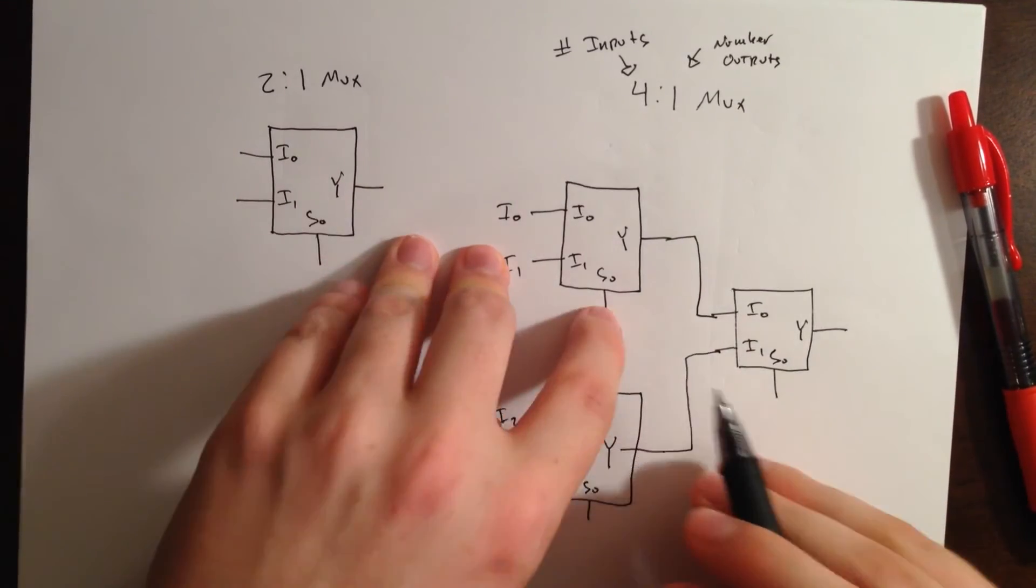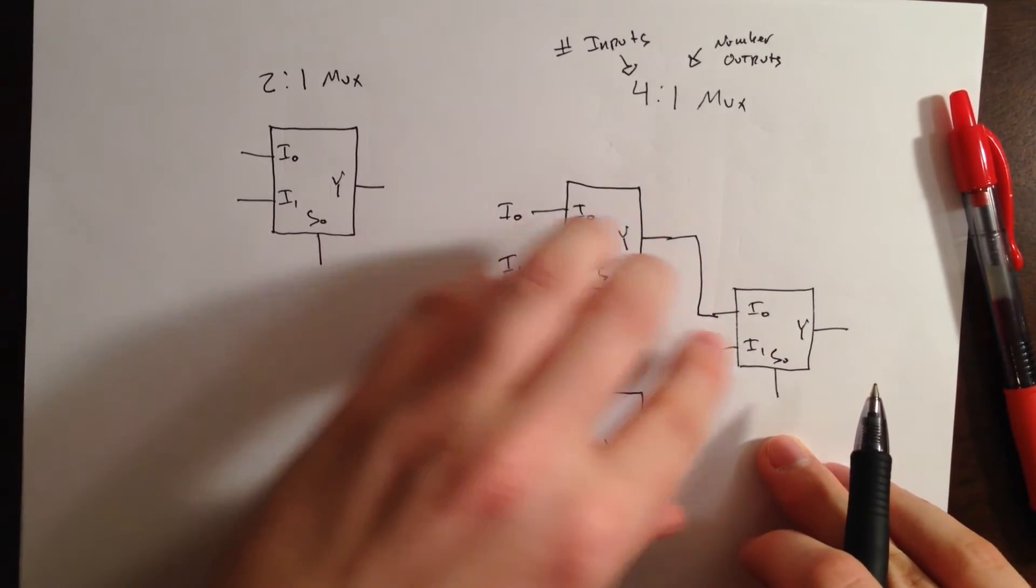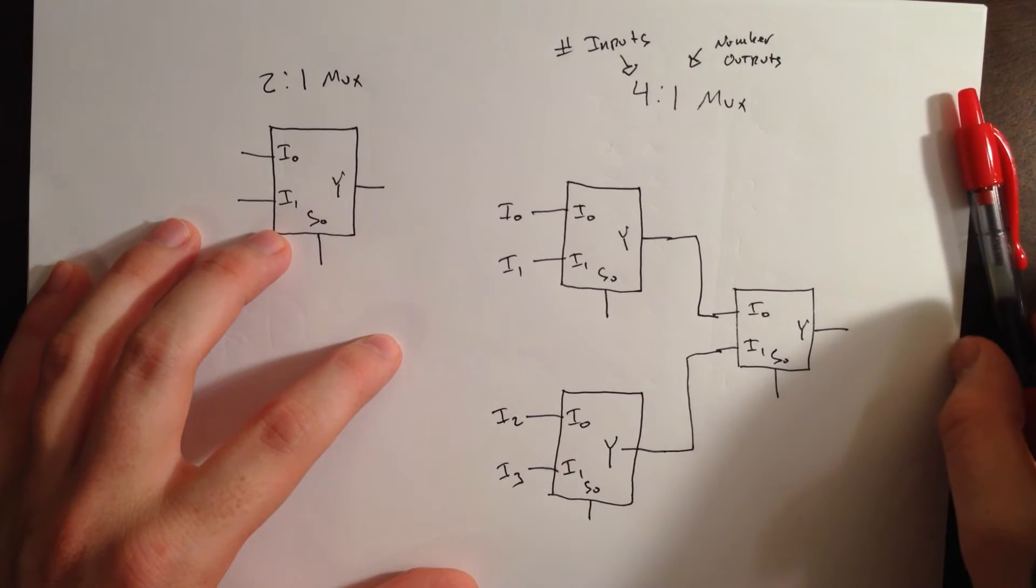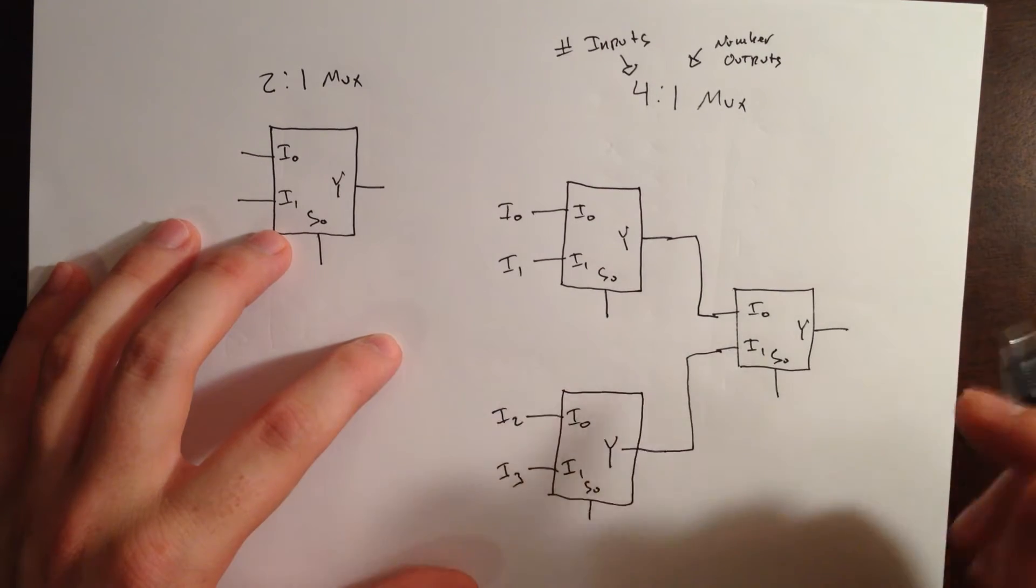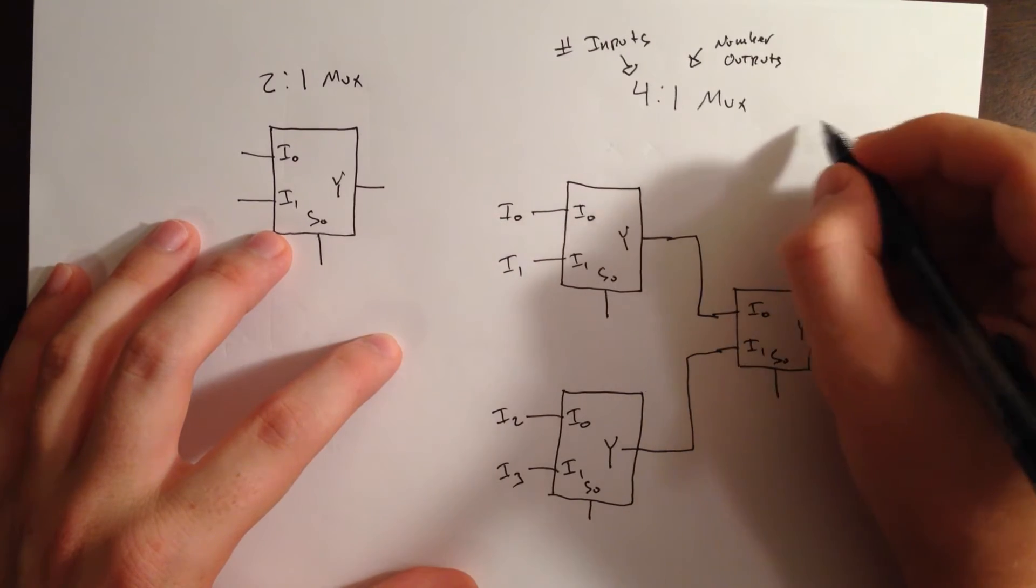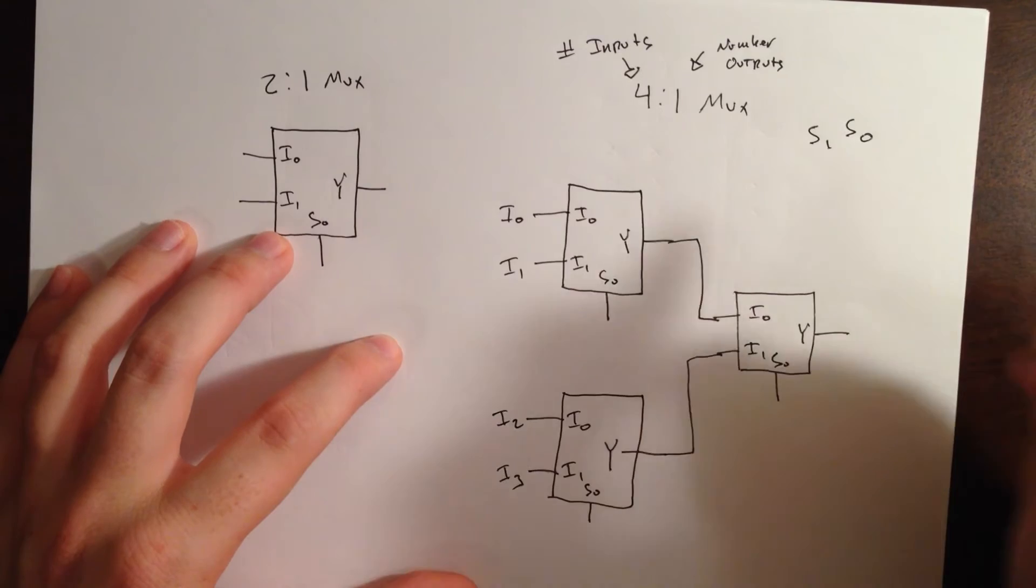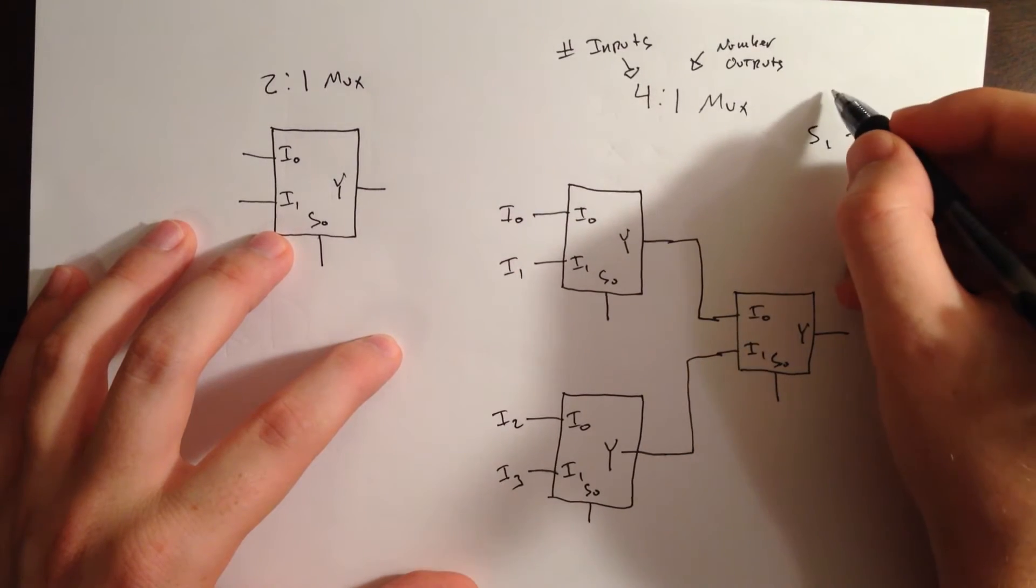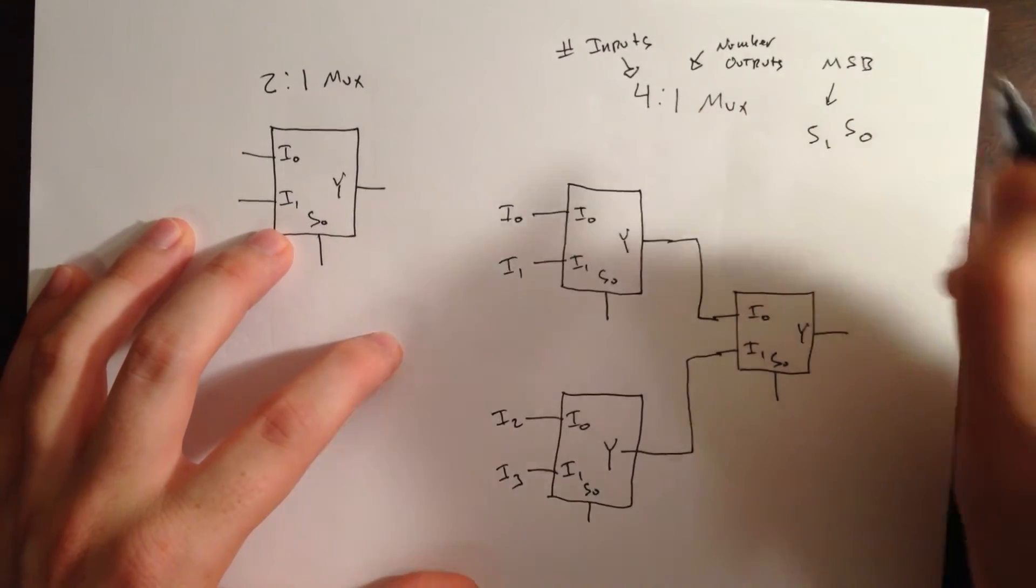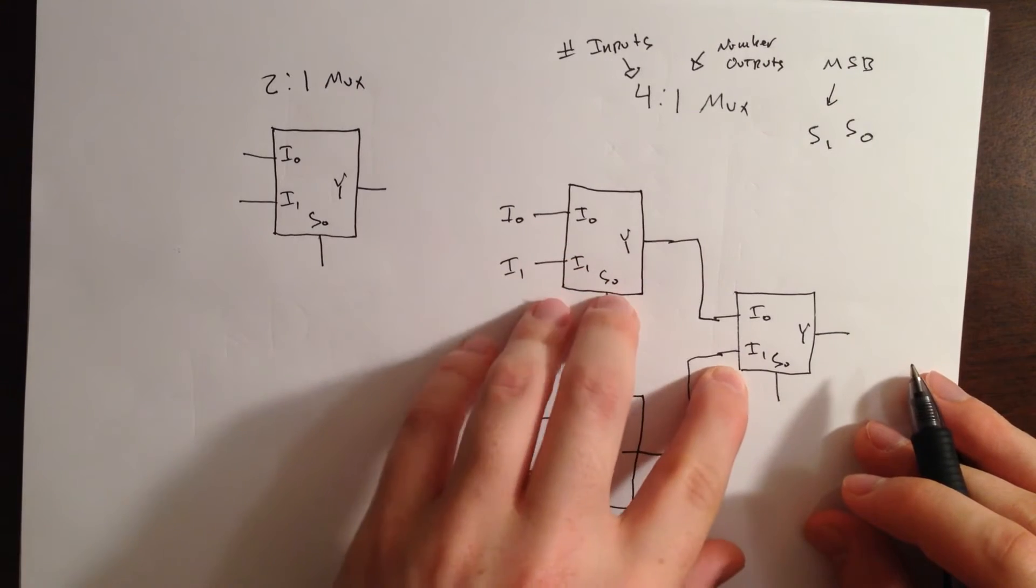But, we need to figure out a way to select these two and this one. So, for our 4:1 multiplexor, we'll have two binary input selectors, S1 and S0. And, our leftmost value is going to be our most significant bit. And, this one right here is going to be our most significant multiplexor.